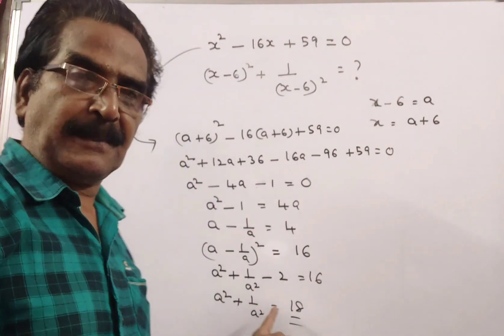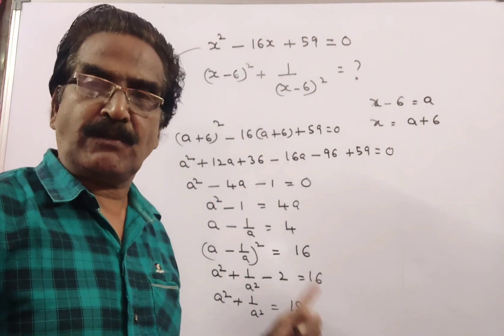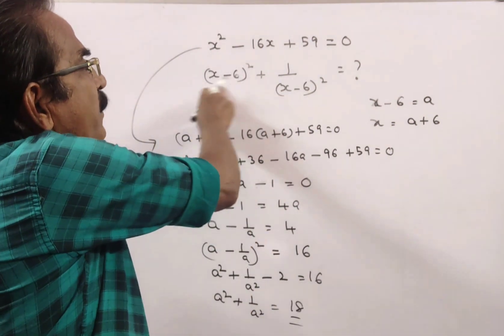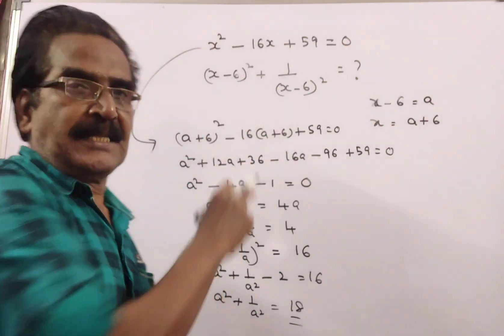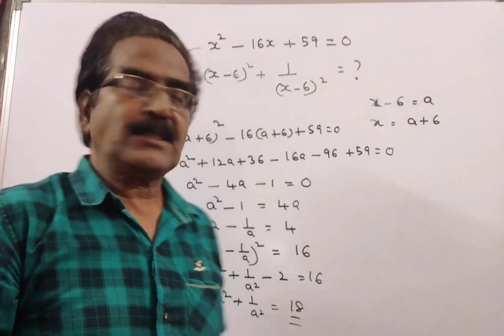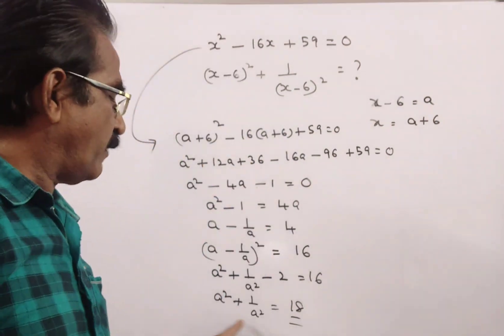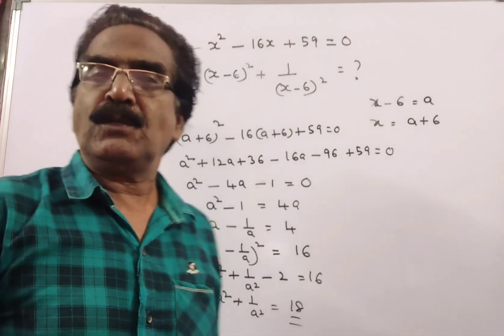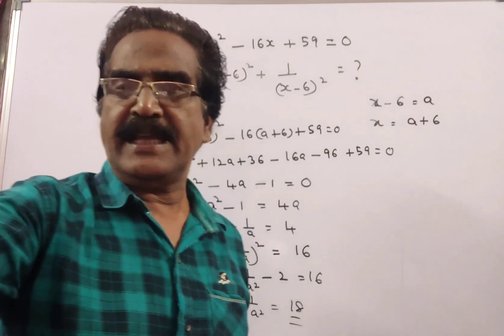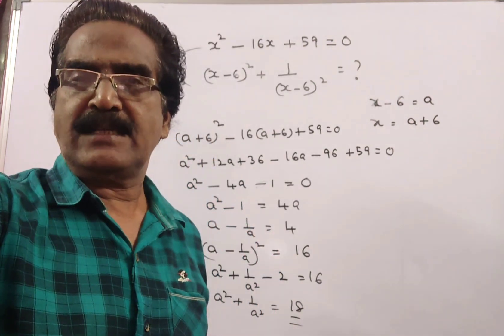That is the a² plus 1 by a² value we want. So (x minus 6)² plus 1 by (x minus 6)² is equal to 18. Friends, thank you. Have a nice day.